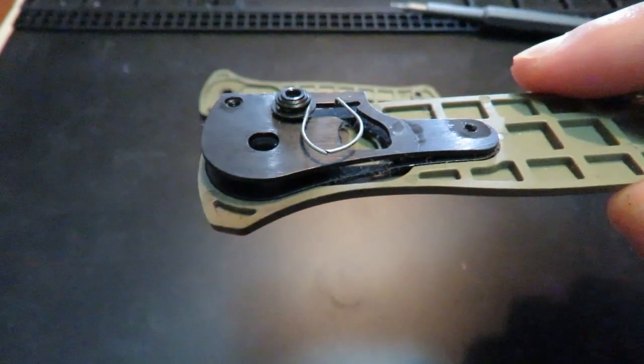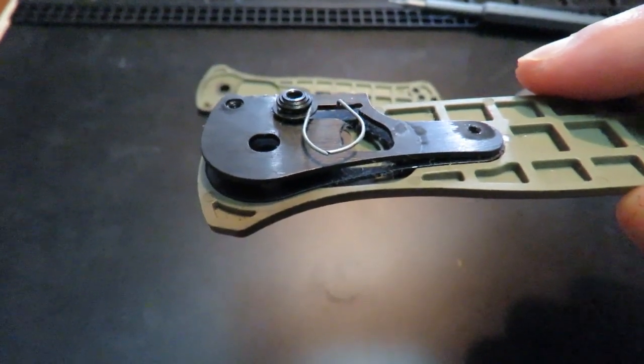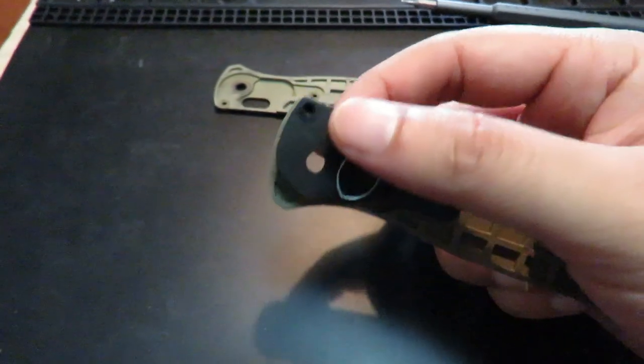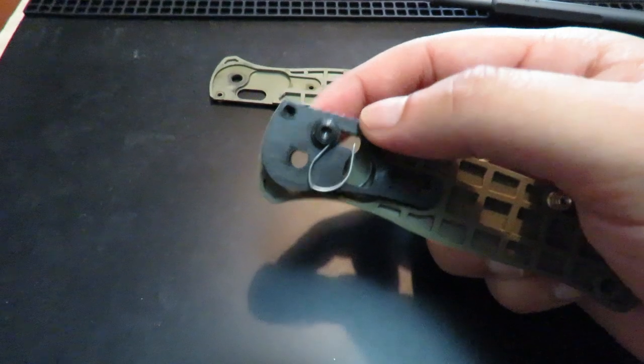As you can see here, the Omega spring right here has snapped. What the Omega spring does is it gives tension for it to move back and forth.